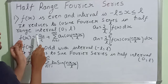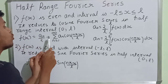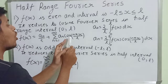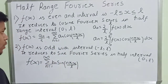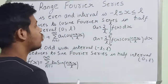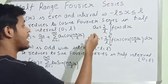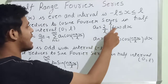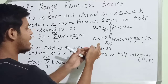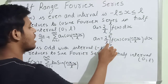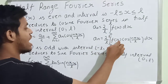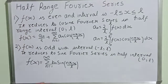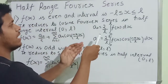The cosine Fourier series formula is: f(x) equals a-naught by 2 plus summation from n equals 1 to infinity of a_n cos(nπx/l). The coefficients are: a-naught equals 2 by l times the integral from 0 to l of f(x) dx, and a_n equals 2 by l times the integral from 0 to l of f(x) cos(nπx/l) dx.